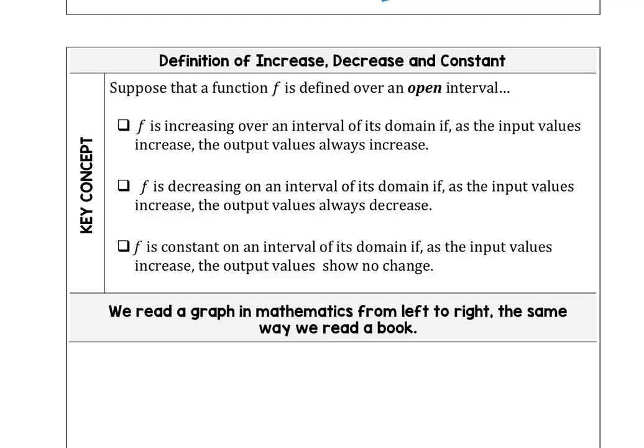In this next example, the definition of increase, decrease, and constant behavior has been modified a little bit compared to your notes. We say that f is increasing over an interval of its domain if the input values increase, then the output values always increase. A function is decreasing on an interval if the input values increase, the output values decrease.